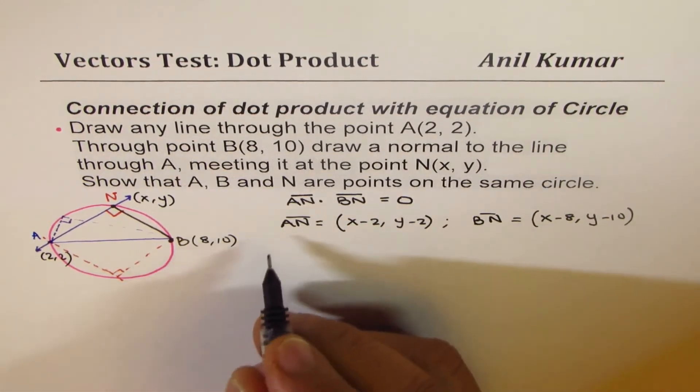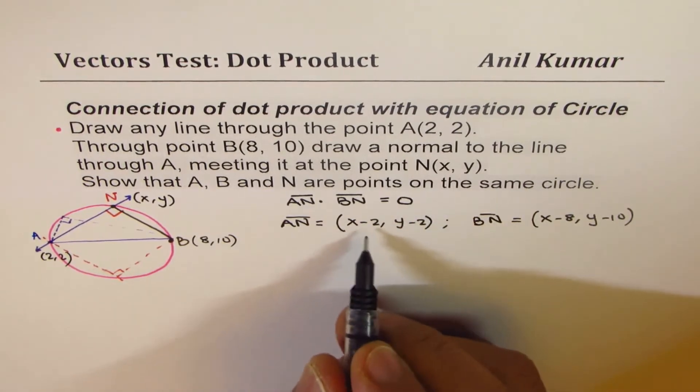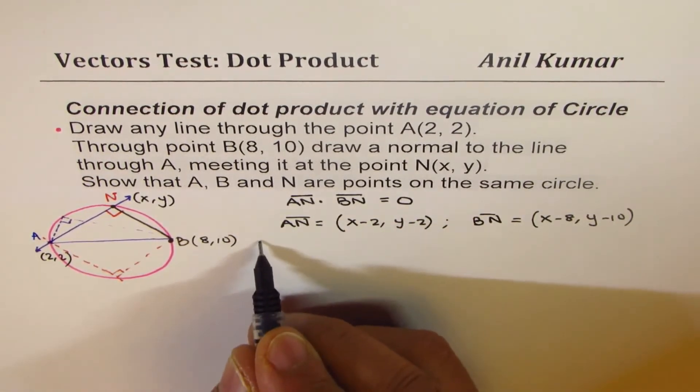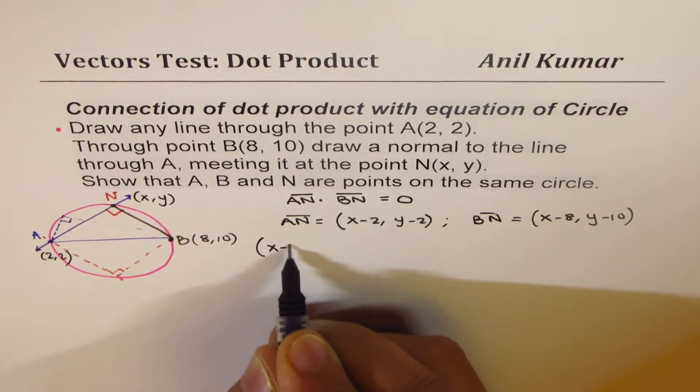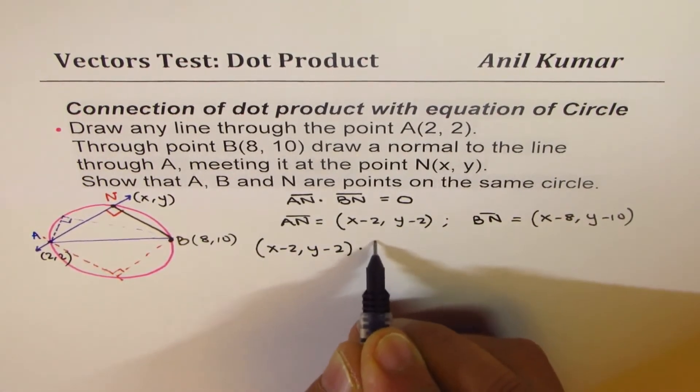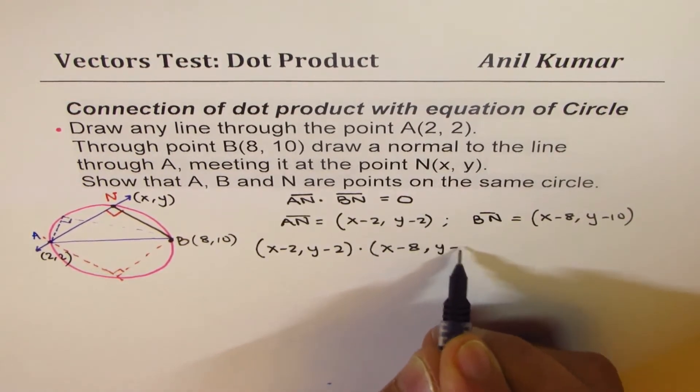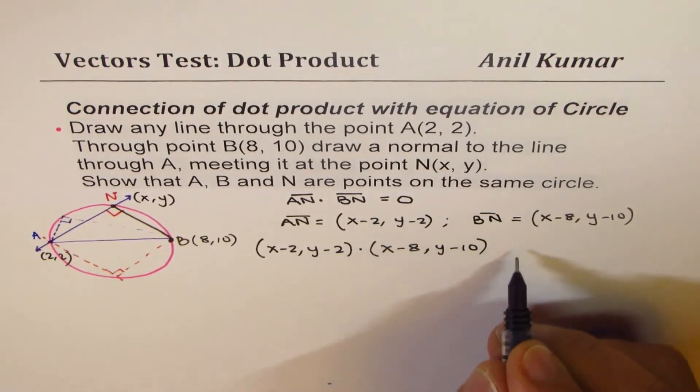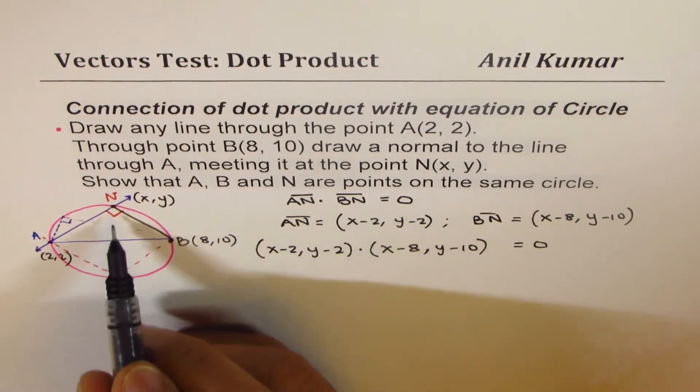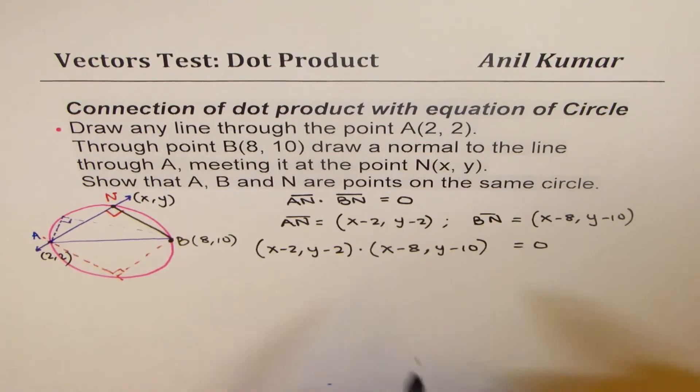So let's find the dot product. What is AN dot BN? We can write this as (X minus 2, Y minus 2) dot (X minus 8, Y minus 10). And this dot product should be equal to 0, since we are given that's a right angle. So we can equate it to 0.